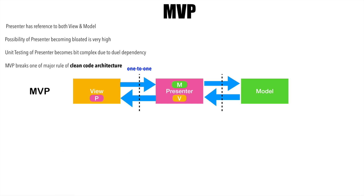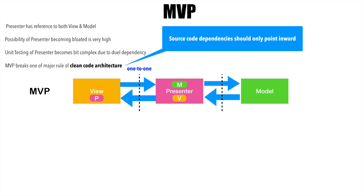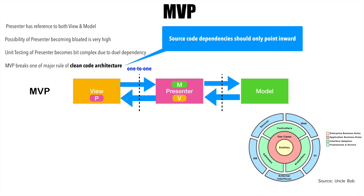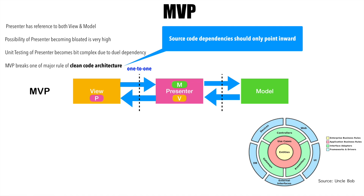Last but not the least, MVP breaks one of the major rules of clean code architecture — that source code dependencies should only point inwards. If you are a fan of writing clean code, you may have come across Uncle Bob's clean code architecture. As per his recommendation, dependencies should always point inward: the UI can have a reference to the Presenter, but the Presenter should not have a dependency on the UI. It should move from outer layer to inner — UI to Presenter, then to use cases, and finally to the entities. As you can see, MVP is breaking this.